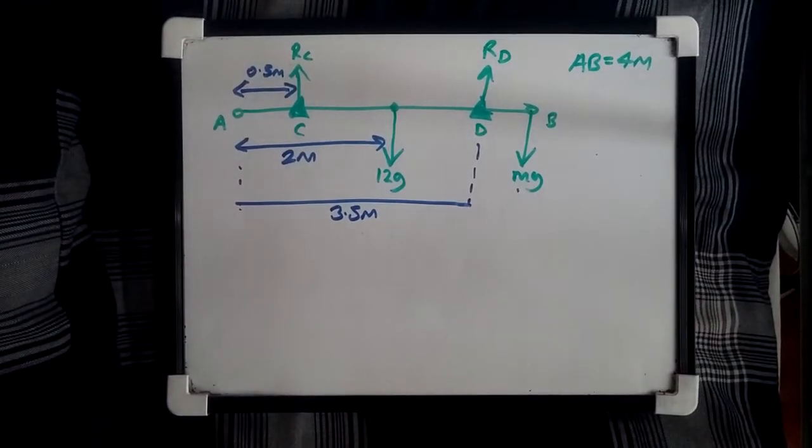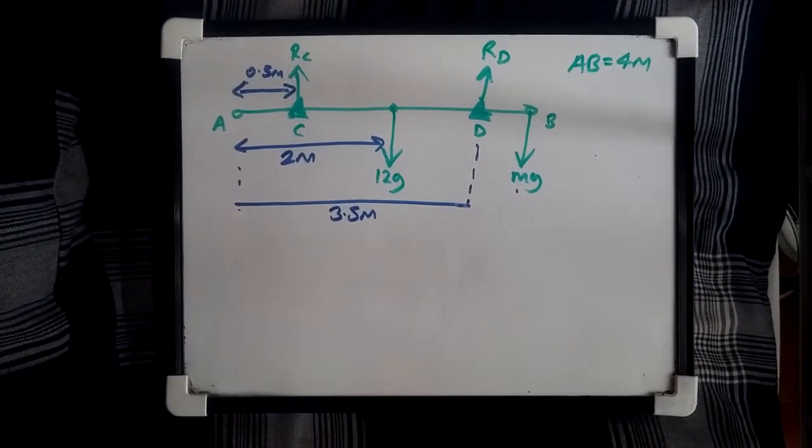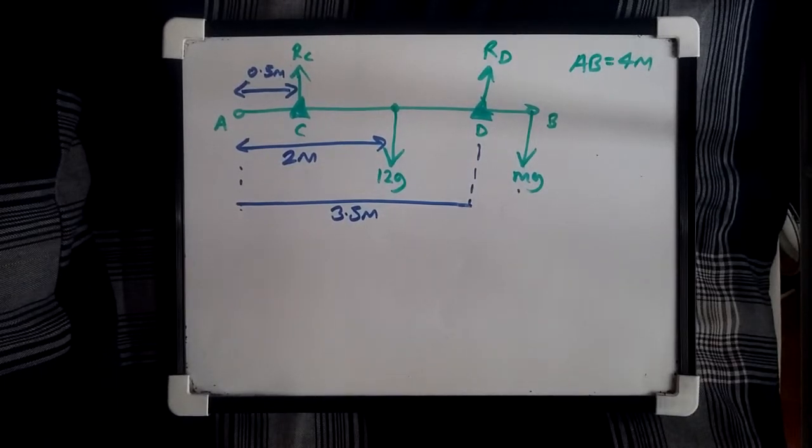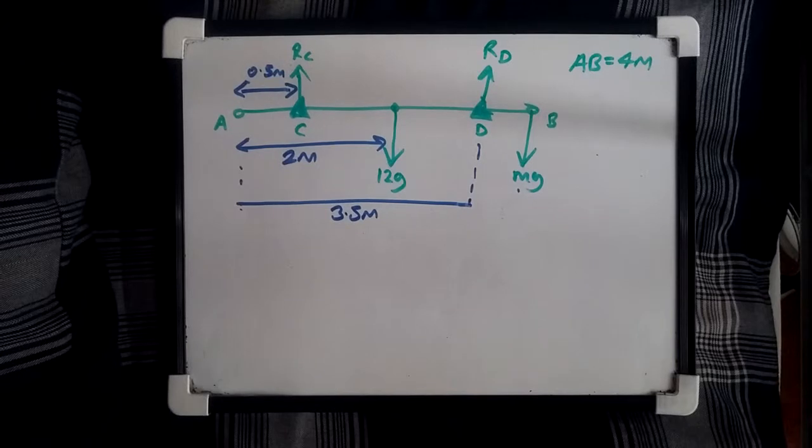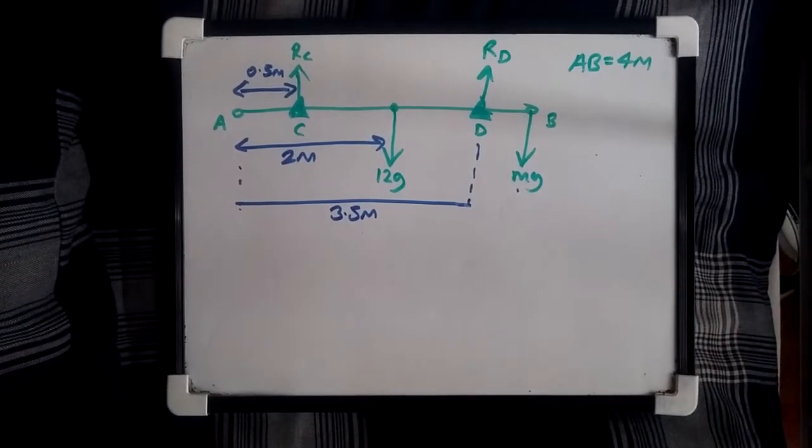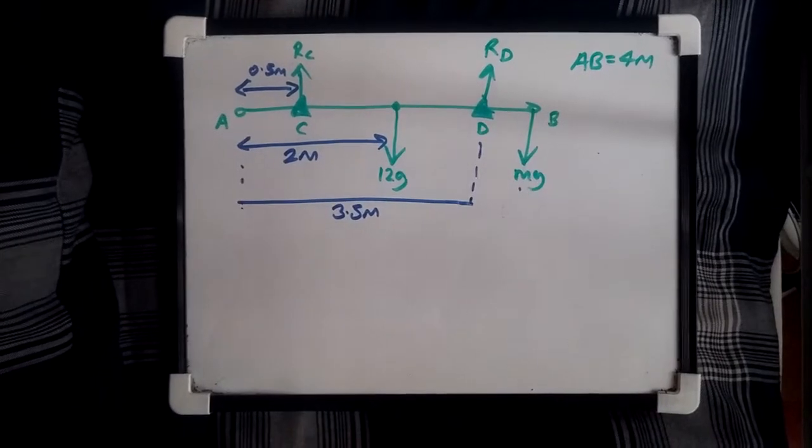So without further ado, let's go. So in this example I got it from example 9 from page 124 of Pearson's Mechanics 1 M1 book. And the main idea is, so it's already been labelled and you can see the same diagram, is that we're dealing with a uniform rod.